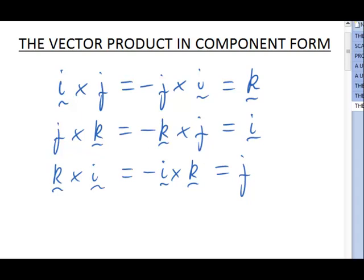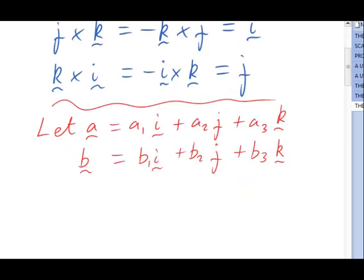In this MathsCast, I'm going to work out a formula for the vector product of any two vectors a and b in terms of the components of a and b. So we'd better start by writing down a and b in component form.